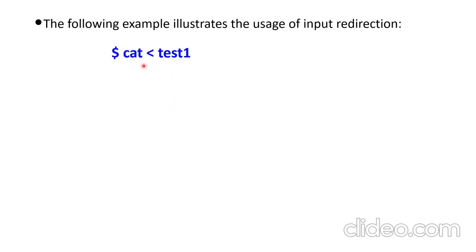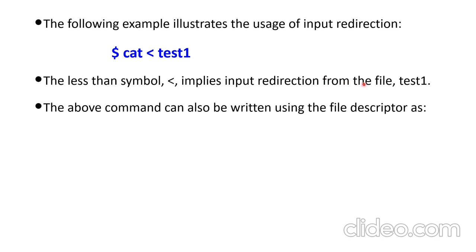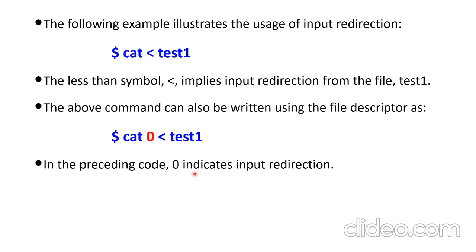Let's see an example. Cat less than test1. Less than symbol implies the input redirection from the file test1. It can also be written with the file descriptor 0. I hope you remember that 0 indicates the input redirection.